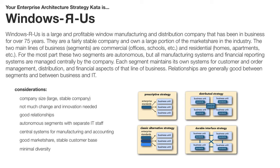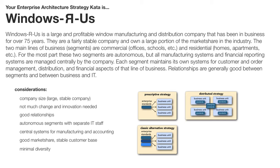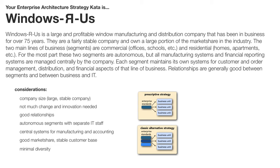With these considerations in mind, I think because we've got autonomous segments but not a whole lot of diversity, the durable interface strategy is probably not a good choice. Because of that minimal diversity, durable interface does not seem like a really good choice — and neither does distributed. Because they are stable, a large company with minimal innovation and not much change, we don't need to go overboard having commercial and residential lines of business doing their own thing, making their own decisions. There's really high cost associated with those, and minimally shared standards or durable interfaces are really hard to maintain.